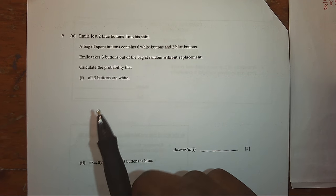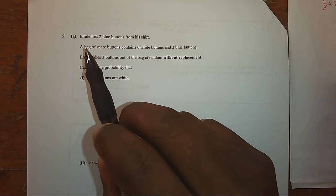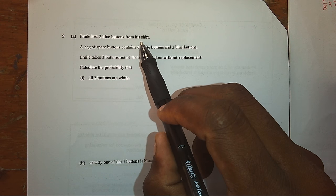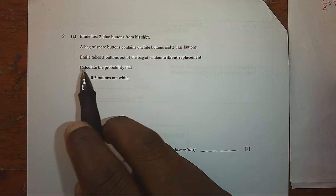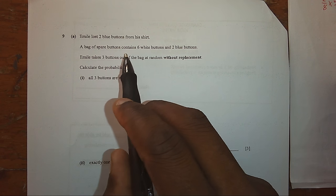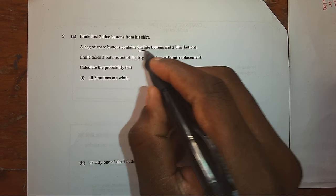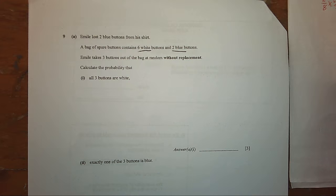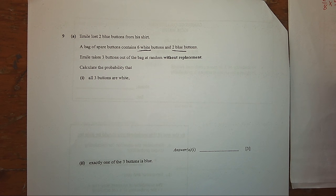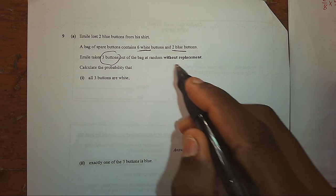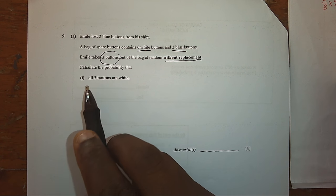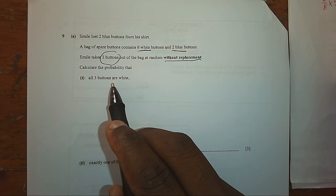Welcome again. Here we have another problem. Emily loads two blue buttons from a shirt. A bag of spare buttons contains six white buttons and two blue buttons. Emily takes three buttons from the bag at random without replacement. Calculate the probability that all three buttons are white.